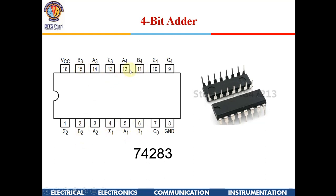The second 4-bit input is B1, B2, B3, and B4. The chip adds these two 4-bit values along with C0 and gives outputs at Sigma 1, Sigma 2, Sigma 3, Sigma 4. The carry-out is available at pin number 9, written as C4.